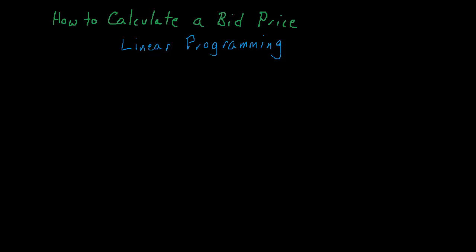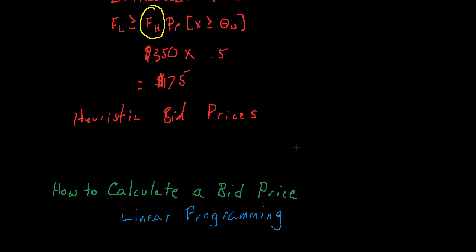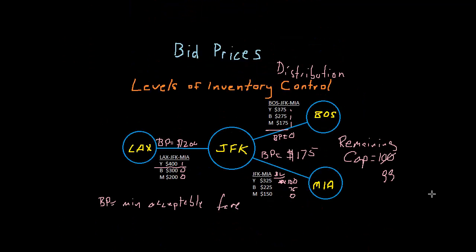We're ready to look at the network models used to calculate bid prices, and the first model we're going to look at is linear programming. This discussion doesn't require that you know a lot about linear programming, so if you're not familiar with the topic you'll still get the point. The primary goal is to show you why a network formulation might be a better approach to calculating a bid price than the heuristic method we looked at in the previous video. Let's take a quick look back at the sample network we used to illustrate network flows, fares, and bid prices.